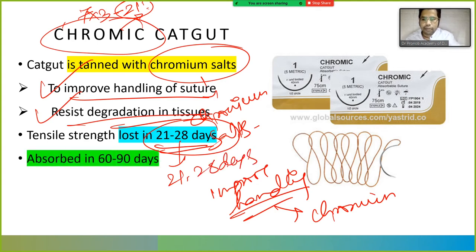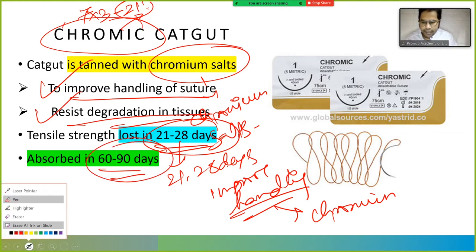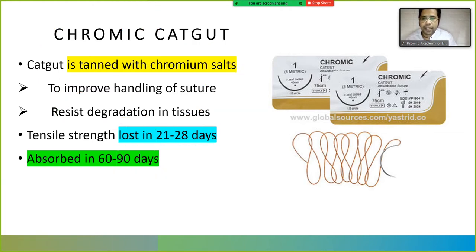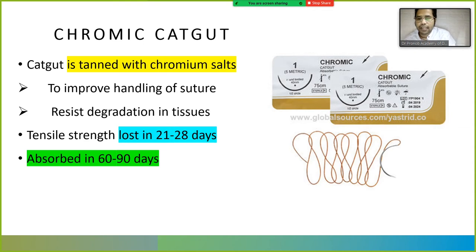Chromic catgut is absorbed in 60 to 90 days. This is an important number to remember.